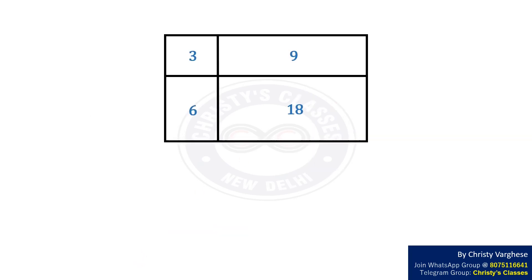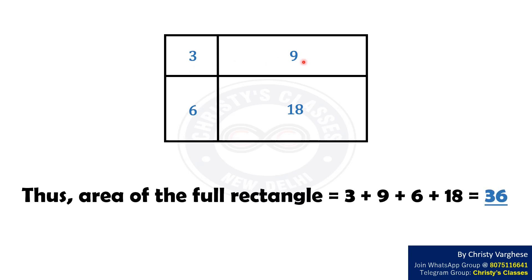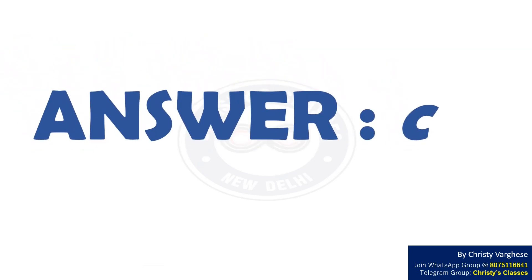Thus, the area of the full rectangle equals 3 plus 9 plus 6 plus 18, that is 36 cm². Hence, the right answer to the question is option C.